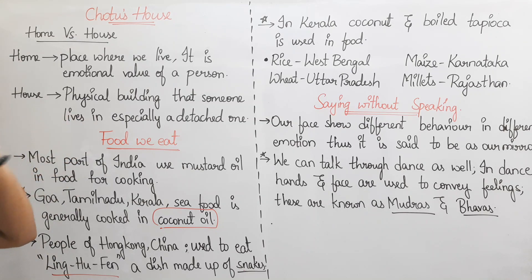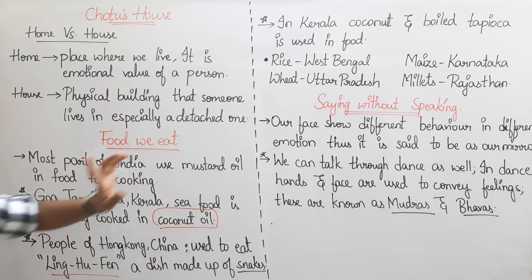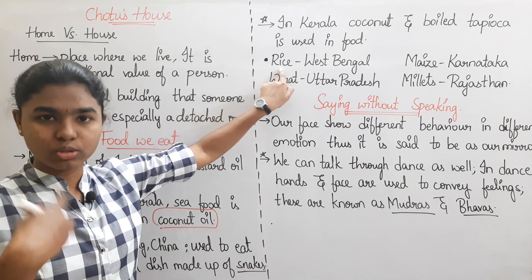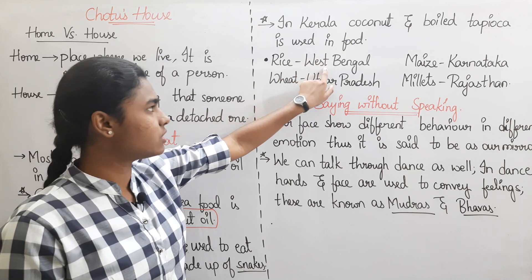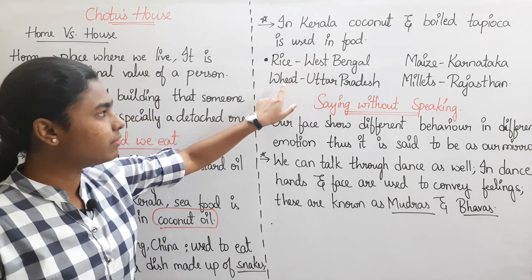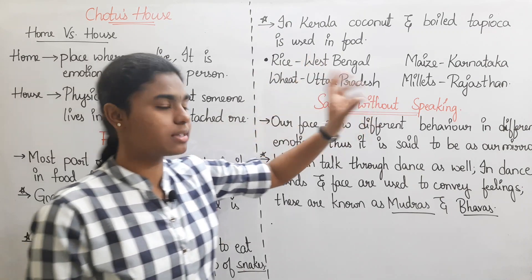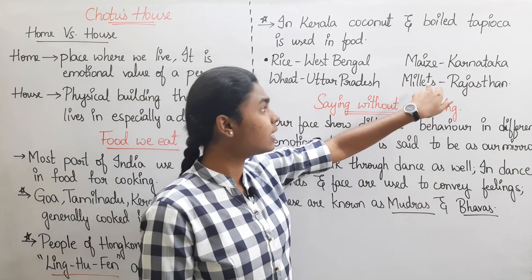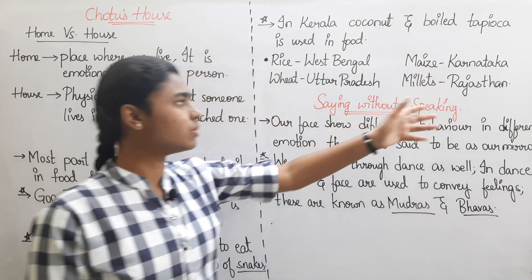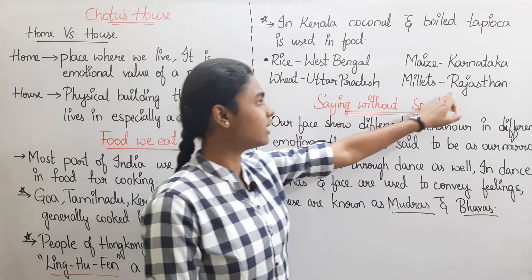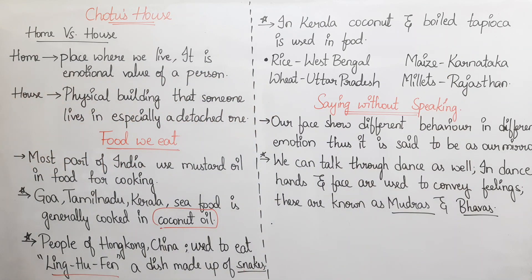One small extra point in Food We Eat: rice is the staple of West Bengal; wheat is the staple of Uttar Pradesh; maize is associated with Karnataka; and millet is associated with Rajasthan.